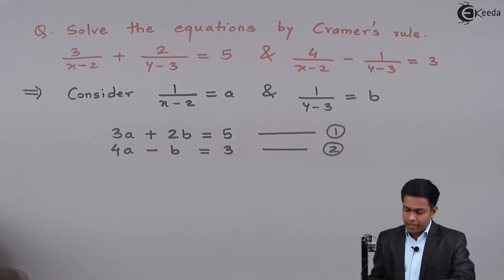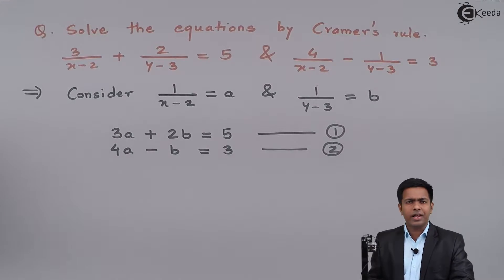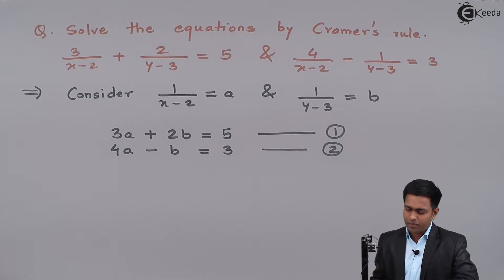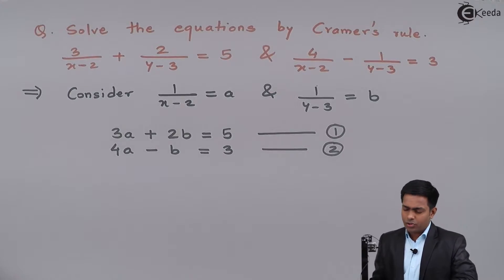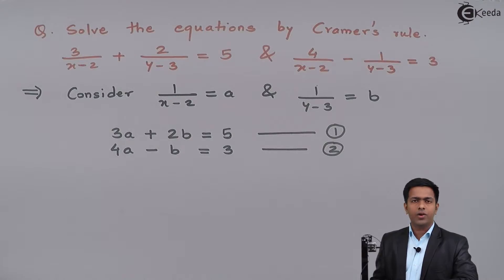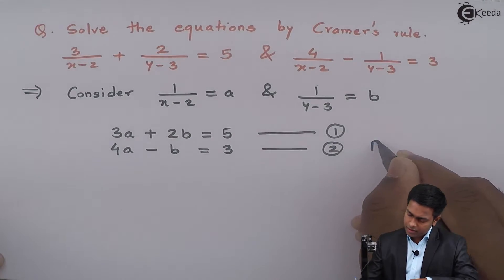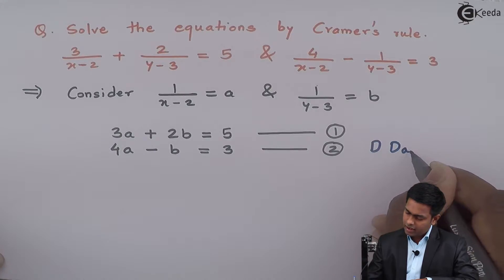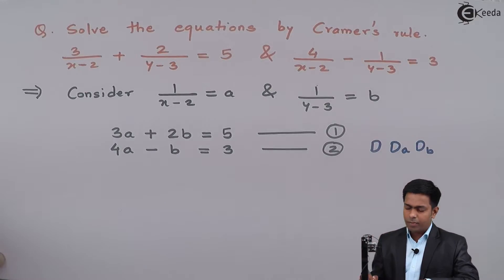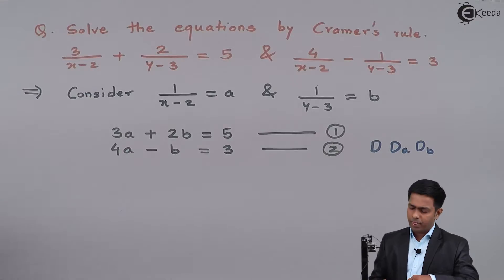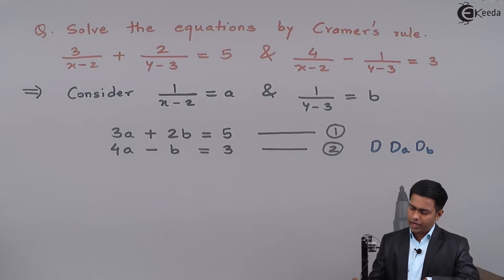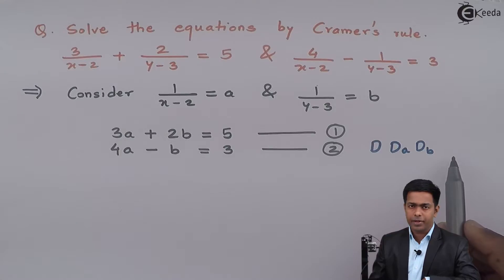Now, if you observe, we have got the equations in linear form. So now let us start with Cramer's rule. To apply Cramer's rule, we have to find out the values of capital D, then DA, and DB, using Sarrus' rule. So first of all I will apply Sarrus' rule to find out D, DA, and DB.